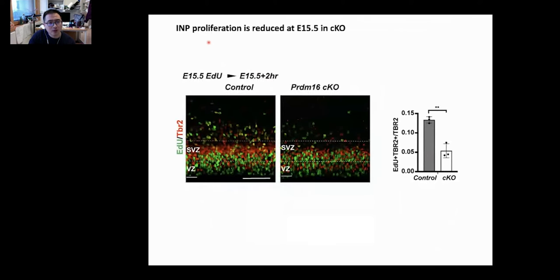To check the second reason, we performed EdU labeling for just two hours, then checked the ratio of EdU TBR2 double positive cells. Clearly, in the control, the normal proliferation is around this level, while in the conditional knockout, there's clearly a reduction. This means that PRDM16 knockdown also affected INP proliferation.